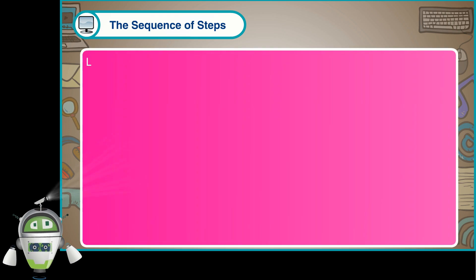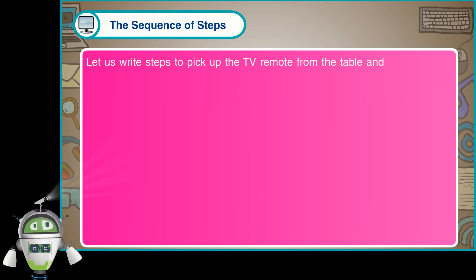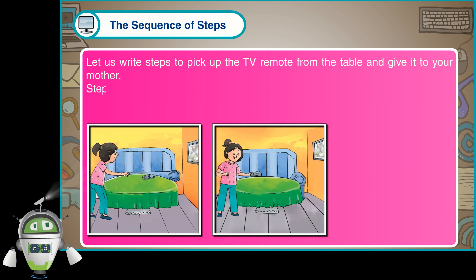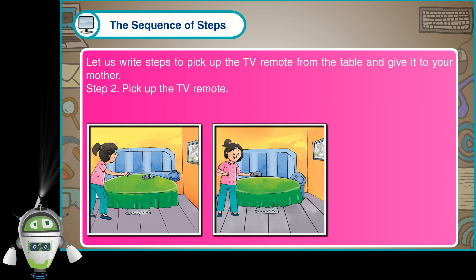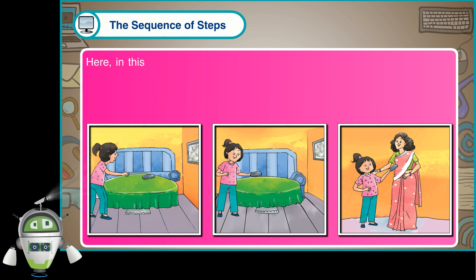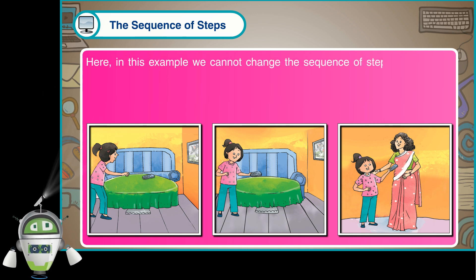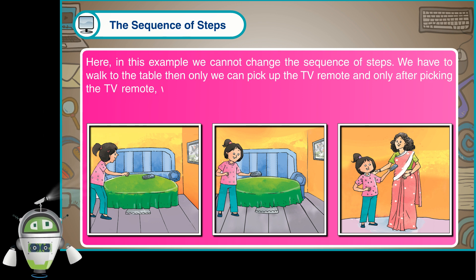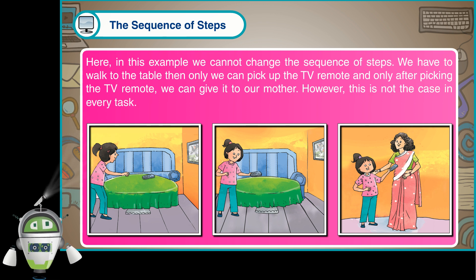The sequence of steps: Let us write steps to pick up the TV remote from the table and give it to your mother. Step 1 - Move towards the table. Step 2 - Pick up the TV remote. Step 3 - Give the TV remote to your mother. Here, in this example, we cannot change the sequence of steps. We have to walk to the table, then only we can pick up the TV remote, and only after picking the TV remote can we give it to our mother. However, this is not the case in every task.